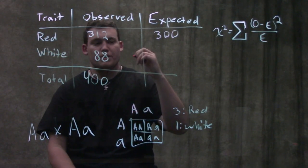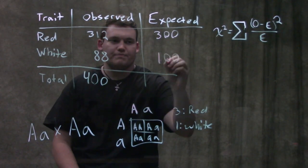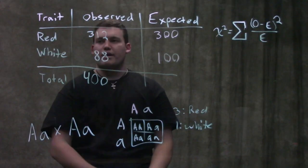one-fourth would be white because we have that three to one phenotypic ratio. One-fourth of 400 is 100. Now we have our observed and our expected values.